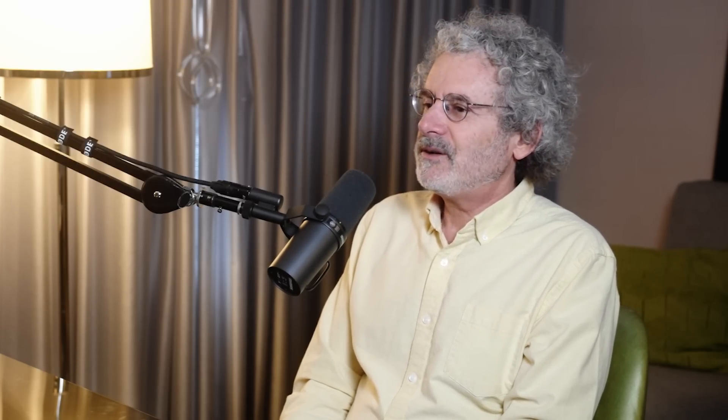I worked with Andy Gleason, who was Turing's counterpart. Just for background, Turing is credited with the modern architecture of computing, among many other things. Andy Gleason was his US counterpart. You might not have heard of Andy Gleason, but you might have heard of the Hilbert problems — Andy Gleason solved the fifth one. So he was a really notable mathematician. During the war, he was Turing's counterpart.